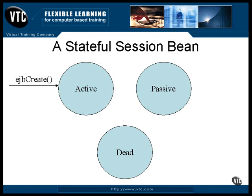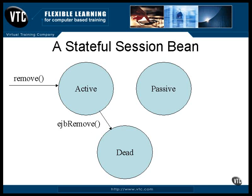When your program first makes contact with a bean, it's created and stored in active memory. It stays there as long as you keep calling its methods from your program. It's possible for the bean to throw some kind of exception while executing a method call — when that happens, the bean is immediately removed from memory. The client can also call the remove method to remove a bean from memory, which causes the container to call the EJB remove method and kill the bean.